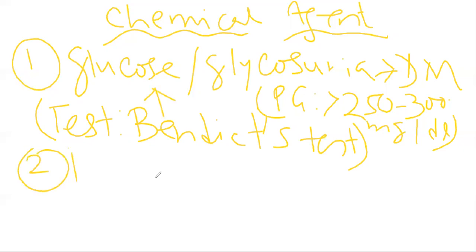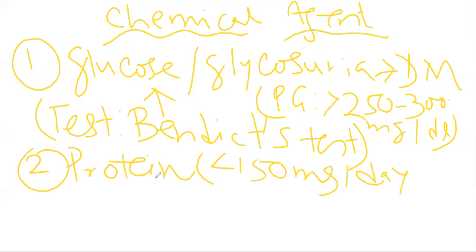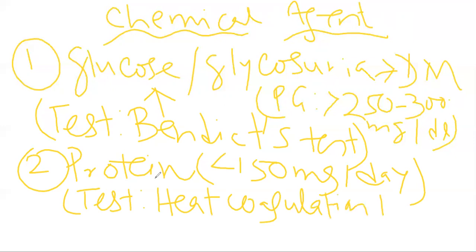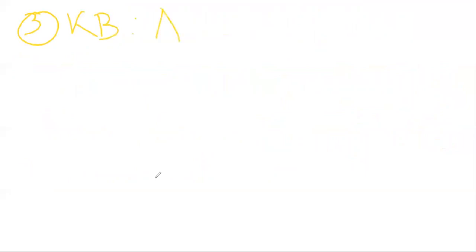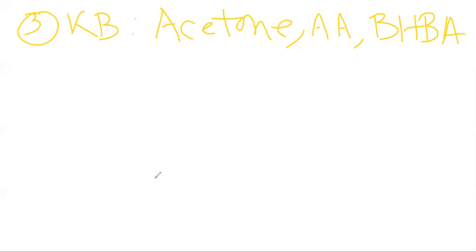Next is protein. Normally presence of protein is known as proteinuria, and the daily protein level in the urine should not exceed more than 150 milligram per day. How we can detect protein in the urine? This test is known as the heat coagulation test, which is the procedure by which you can detect protein in the urine. Next is the ketone bodies — like acetone, acetoacetic acid, or beta-hydroxybutyric acid. Presence of ketones is known as ketonuria.